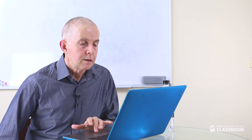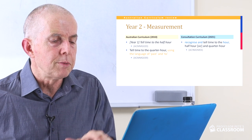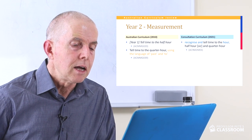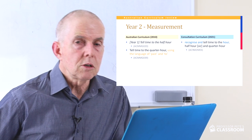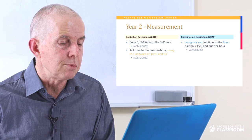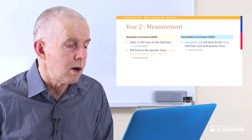The third measurement content descriptor: recognise and tell time to the hour, half-hour and quarter-hour. There's a typographical error — half hour should have a hyphen. In the old curriculum, telling time to the half-hour was in year one and the quarter-hour was in year two. Now it's all combined and introduced in year two, not year one. I think year ones were possibly capable of telling time, but I don't feel strongly enough that it matters enormously.